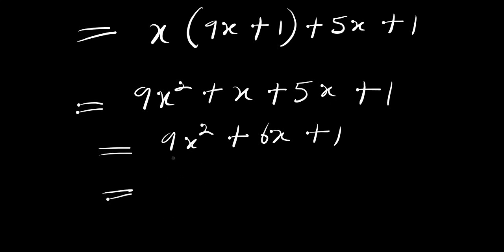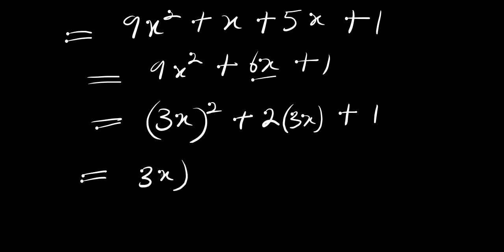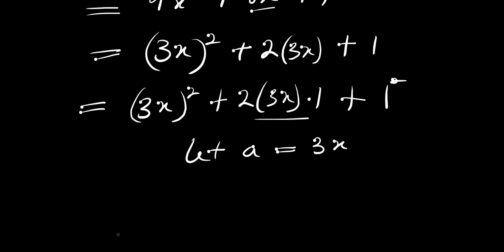We can rewrite 9x squared as (3x) squared, and 6x as 2 times 3x times 1, plus 1 squared. Now let a equal 3x. The expression becomes a squared plus 2a plus 1.